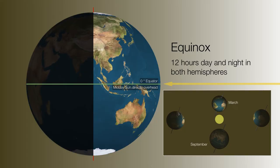The word equinox literally translates to 'equal night,' meaning we get approximately 12 hours of day and night in both hemispheres. The midday sun is directly overhead if you are at the equator. Note that it's approximately 12 hours — not exactly — and we'll get to the reason for that in a moment. At the poles, depending on whether it's the vernal or autumnal equinox, you'll get either 24 hours of dawn at the vernal equinox at the North Pole, or 24 hours of dusk at the autumnal equinox at the North Pole, and vice versa for the South Pole.